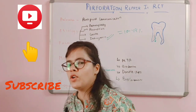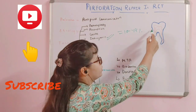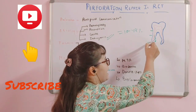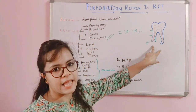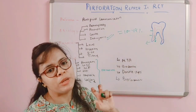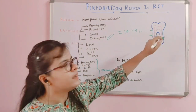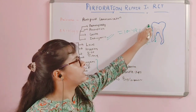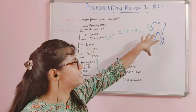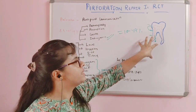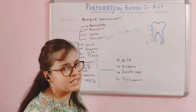Level refers to where the perforation is located within the tooth — it can be in the coronal third, the middle third, or the apical third. A perforation in the apical third has a good prognosis. Why? Because a perforation in the coronal third has communication with the outer surfaces, increasing the chance of inflammation, whereas an apical perforation is contained within the surrounding tissues of the tooth, giving better prognosis chances.